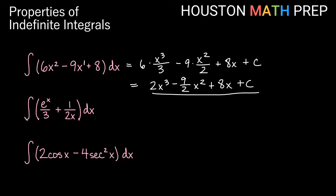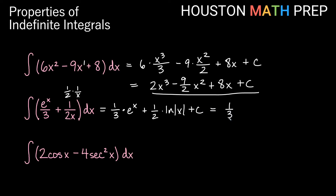Looking at the antiderivative of e to the x over 3 plus 1 over 2x dx. We read e to the x over 3 as 1 third times e to the x, whose antiderivative is just e to the x. For 1 over 2x, we read the 2 on the bottom as a half constant multiple, and the antiderivative of 1 over x is ln absolute value x. So we get 1 third e to the x plus 1 half ln absolute value of x plus c.